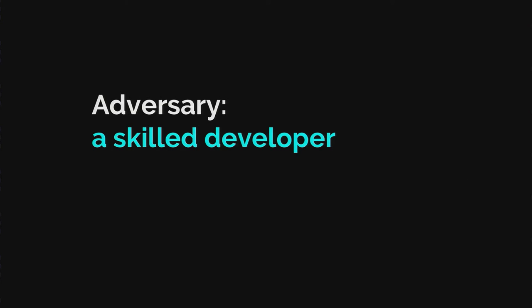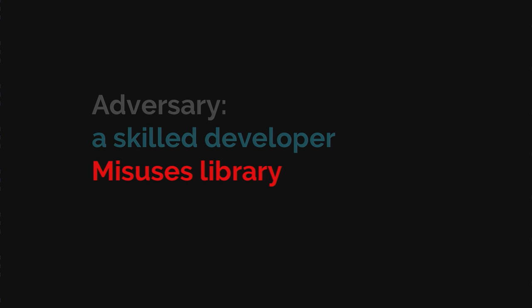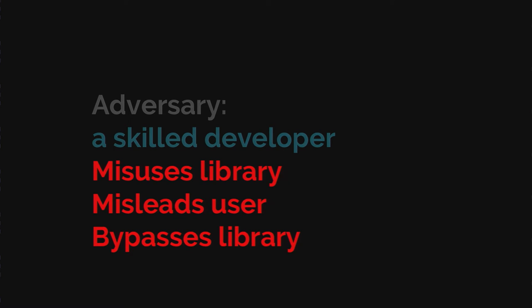The adversary we're defending against is a skilled developer. Because we're in the same execution context, anything we can do, the application can also do. So this developer could try to misuse our library, mislead the user, or bypass the library altogether. The auditing step is also useful here to make sure they're using the correct version of the library.